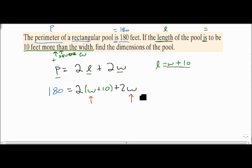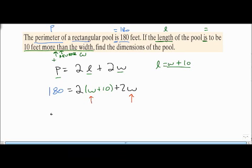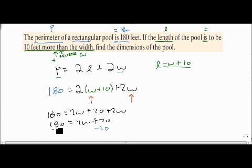So we can, at this point, continue to work the problem. We can distribute 2W plus 20 plus 2W. So 180 equals 4W plus 20 when we combine like terms. We'll subtract 20 from both sides. We'll get 160 equals 4W.